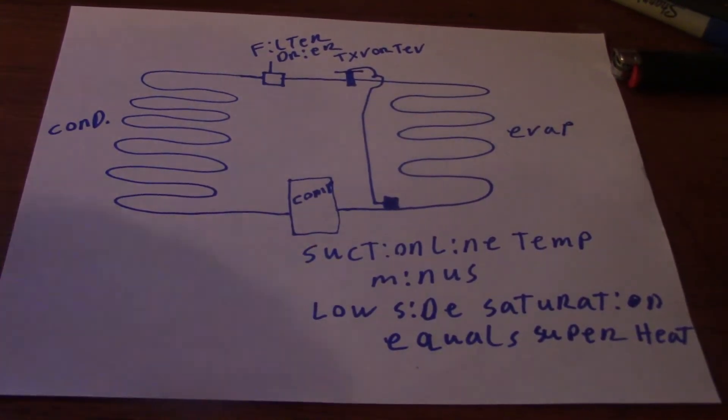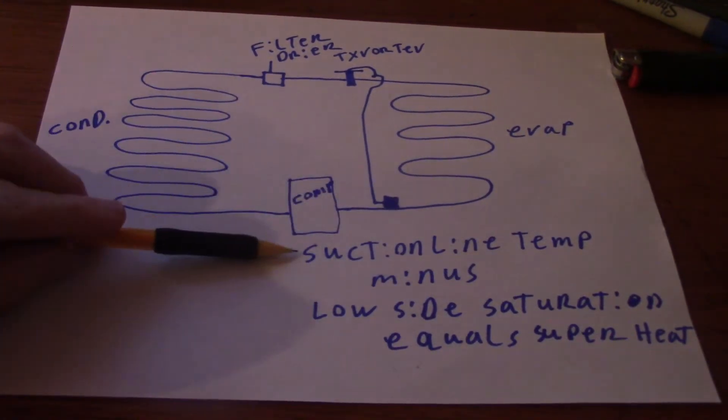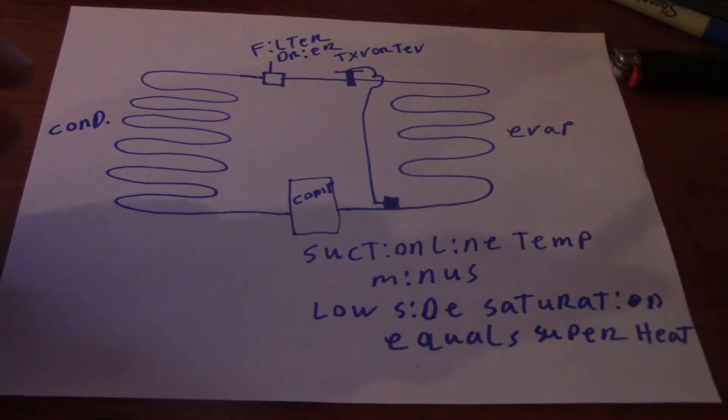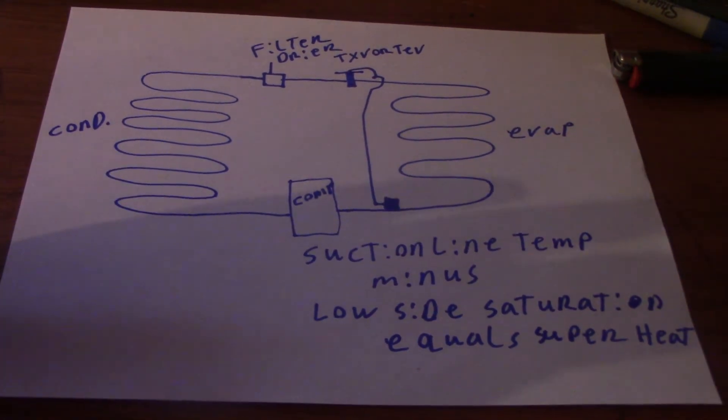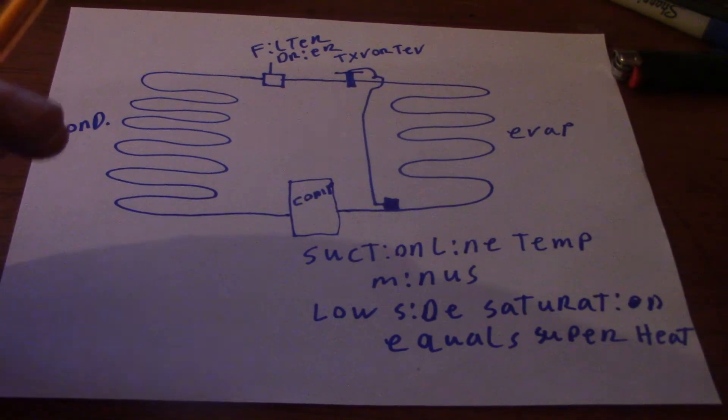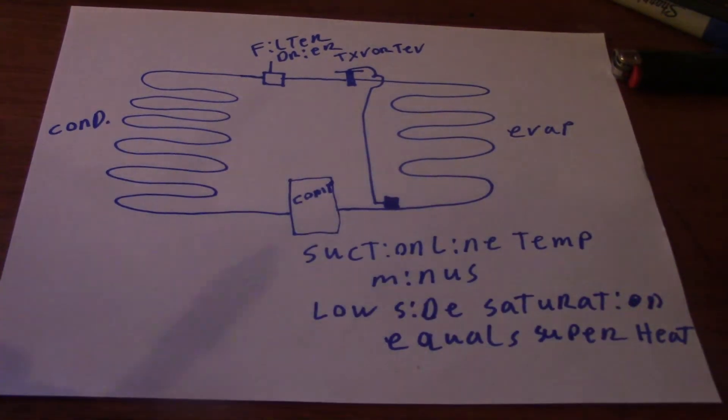So superheat, you calculate it as it says here, suction line temperature minus your low side saturation. That will equal your superheat. What you're calculating by that is how much heat has been added to the refrigerant after it's boiled off in the evaporator.